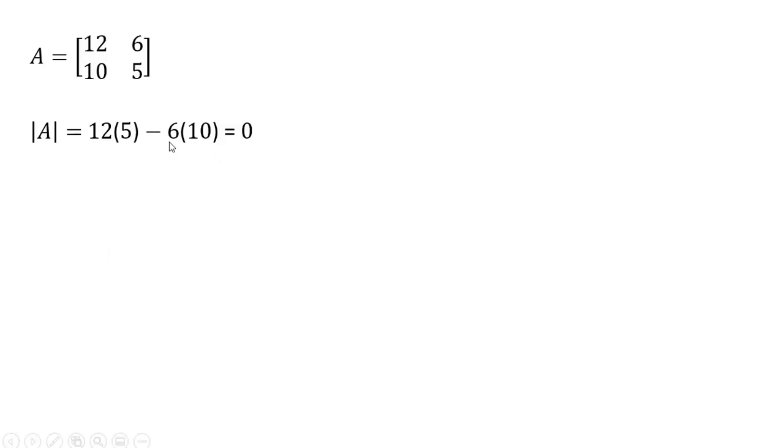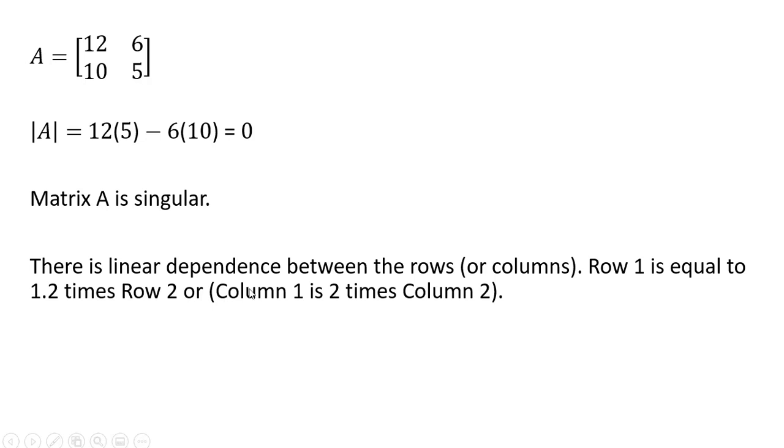Another example of a singular matrix. The determinant is 0. There is linear dependence between the rows or columns. Row 1 is equal to 1.2 times row 2. So 10 times 1.2 gives us 12, 5 times 1.2 gives us 6. Or column 1 is equal to 2 times column 2.